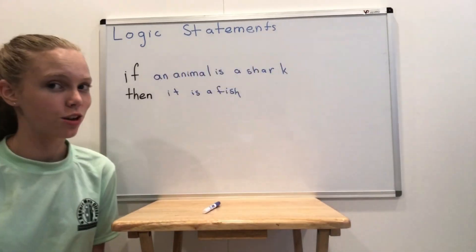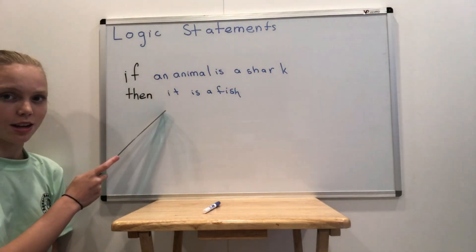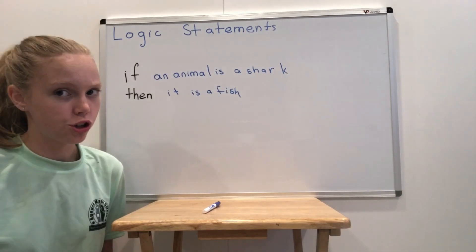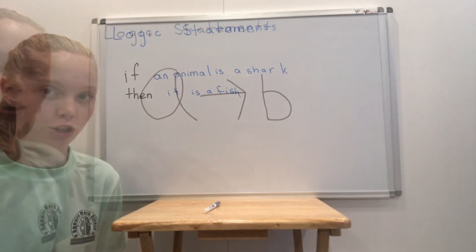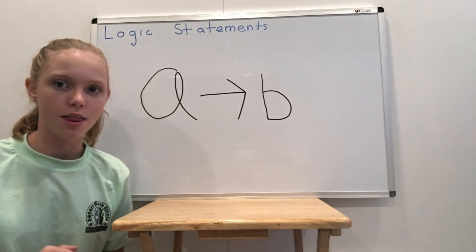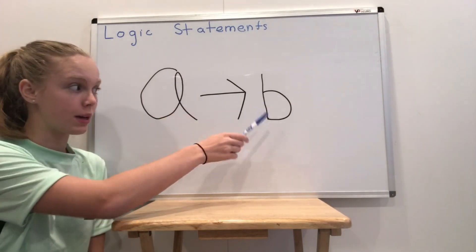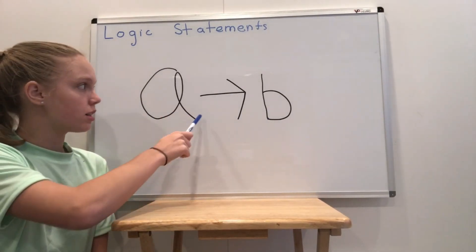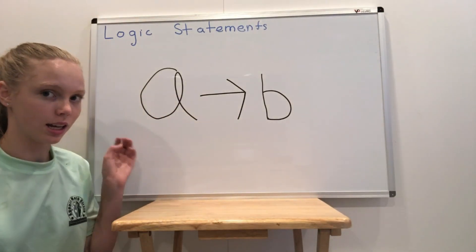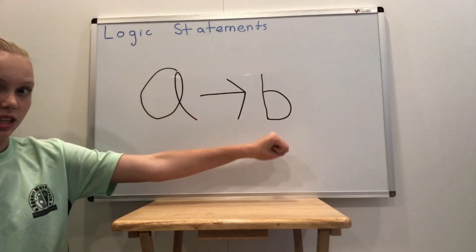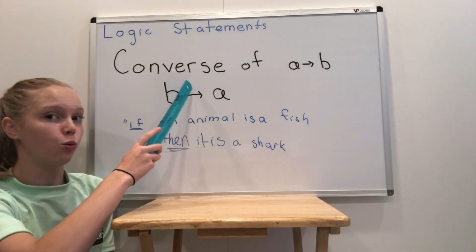Let's look at a simple example of an if-then statement: if an animal is a shark, then it is a fish. This is because all sharks are fish. This is in the form 'if A, then B,' where A is 'animal is a shark' and B is 'animal is a fish.' The middle symbol is read 'implies,' so the statement reads: animal is a shark implies animal is a fish. The converse of the statement simply switches which one implies the other.